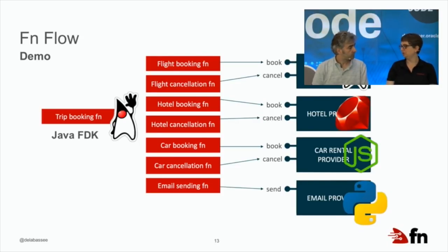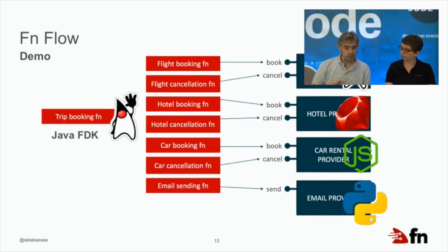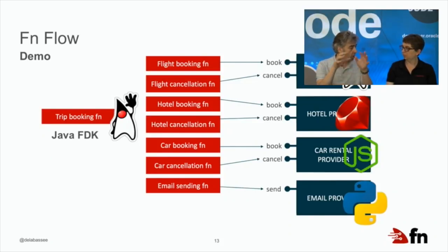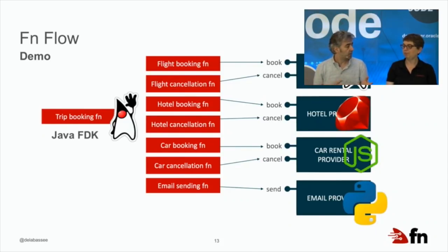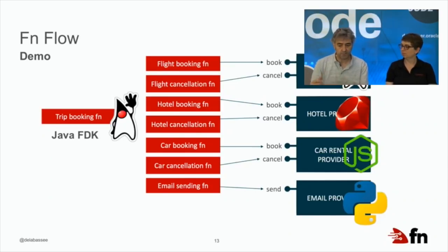One thing to highlight about FN Flow is the polyglot nature of FN. The trip booking function uses Flow, but the back-end functions it calls can be in any language — for example, the flight booking function written in Java, the hotel booking function written in Ruby, and so on. FN Flow's Java API can consume all those functions regardless of language — that's one of the key benefits of FN Flow and of FN's polyglot nature.